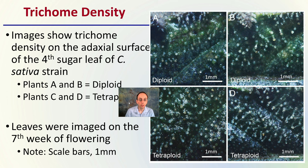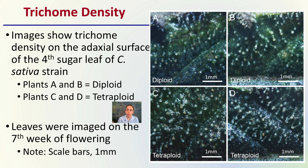Next, trichome density was examined — very important in cannabis plants. The images show trichome density on the fourth sugar leaf surface of a cannabis sativa strain. Plants A and B are diploid; C and D are tetraploid. Leaves were imaged in the seventh week of flowering, and the scale bars are one millimeter to give a size comparison. We can clearly see there is definitely increased trichome density in the tetraploids.